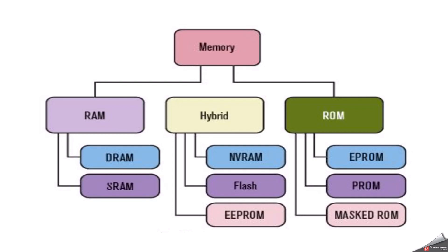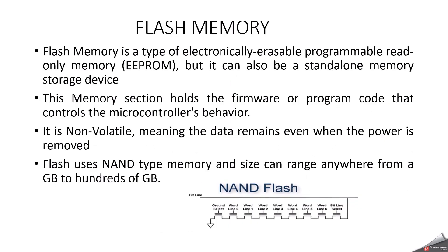That is the reason I chose this image to represent the three kinds of memory: RAM, hybrid, and ROM. But in this video, we will more deeply discuss what is flash and what is EEPROM. First, we can start with what is flash. Flash memory is a type of electronically erasable programmable read-only memory — meaning flash is a type or kind of EEPROM.